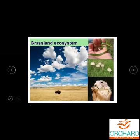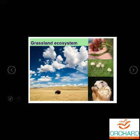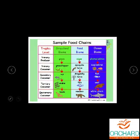Next is the grassland ecosystem. You can see some pictures — snakes, mushrooms, and more. You can also see a sample food chain with trophic levels: primary producer, primary consumer, secondary consumer, tertiary consumer, and quaternary consumer. We also have grassland biome, pond biome, and ocean biome.